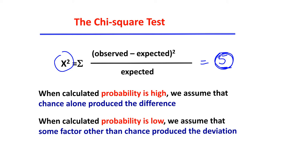Remember what we asked: what is the probability that chance alone produces the difference between observed and expected values? This hypothesis is called the null hypothesis. When the probability is high, we keep — or adopt — the null hypothesis, meaning chance alone produced the difference. However, when the probability is low, it tells you that another factor might be involved, and you reject the null hypothesis.